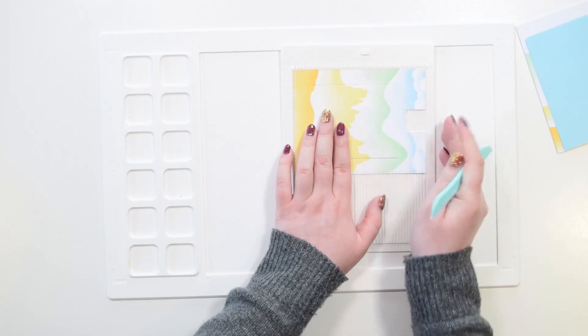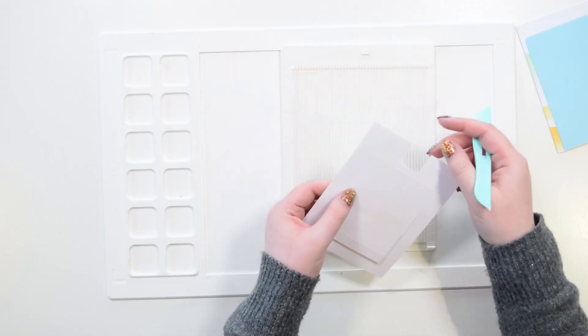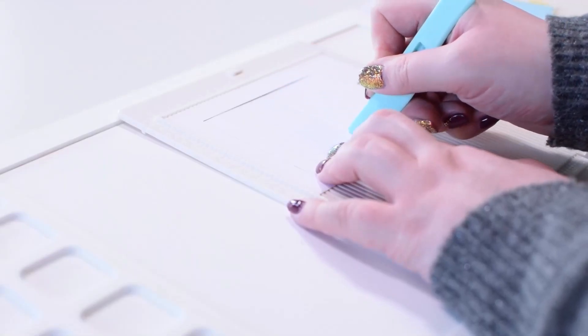I'm just making a wee notch here so that I can clearly see when I flip it over where I'm creasing, and then just creasing again down the middle.